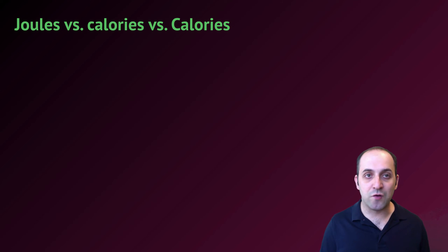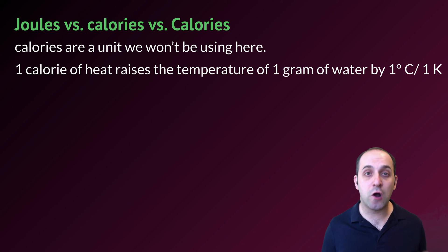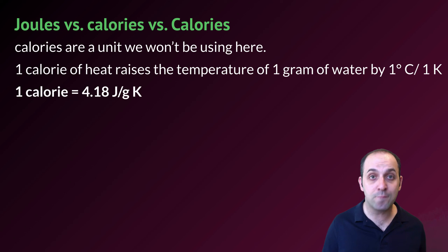We'd mentioned in our previous conversation that we're really only going to use joules in this class, but another common unit of energy is the calorie, which of course we're all familiar with from dietary labels. Calories are a unit that we generally will not be using here, but I thought that we should talk about them a little bit since we see them so much in our lives. One calorie of heat is defined as the amount of energy needed to raise the temperature of one gram of water by one degree Celsius or one degree Kelvin. Remember, they're the same thing. One calorie is defined as 4.18 joules per gram degrees Kelvin or degrees Celsius, so it would take 4.18 joules of energy to raise the temperature of one gram of water by one degree Celsius or Kelvin.